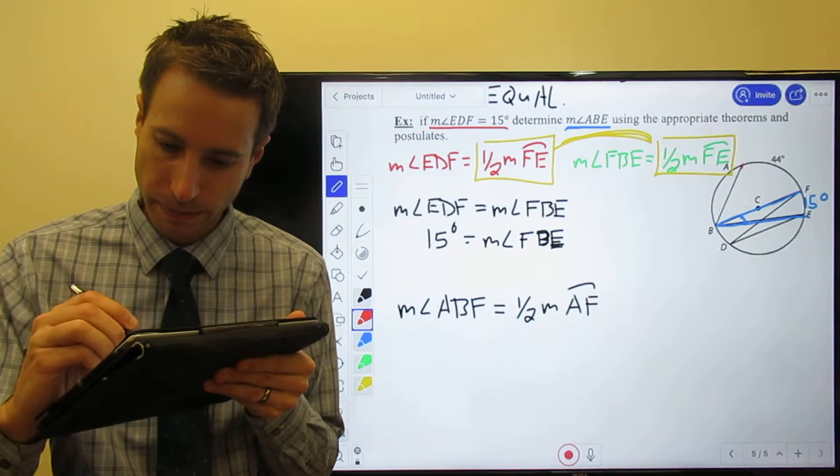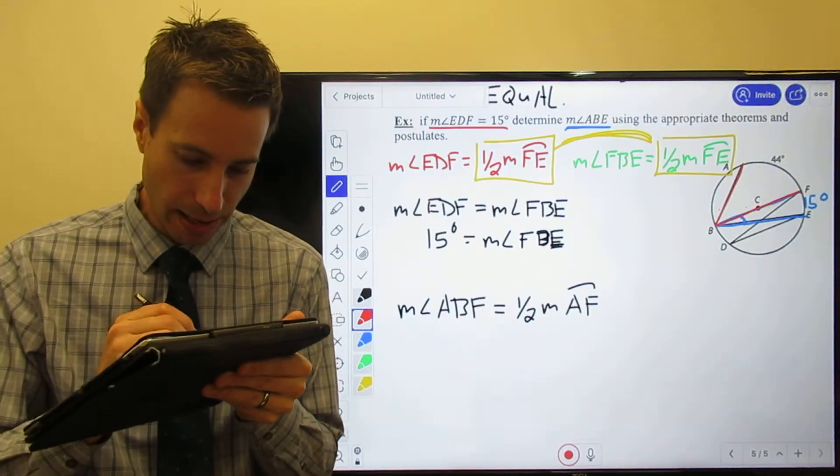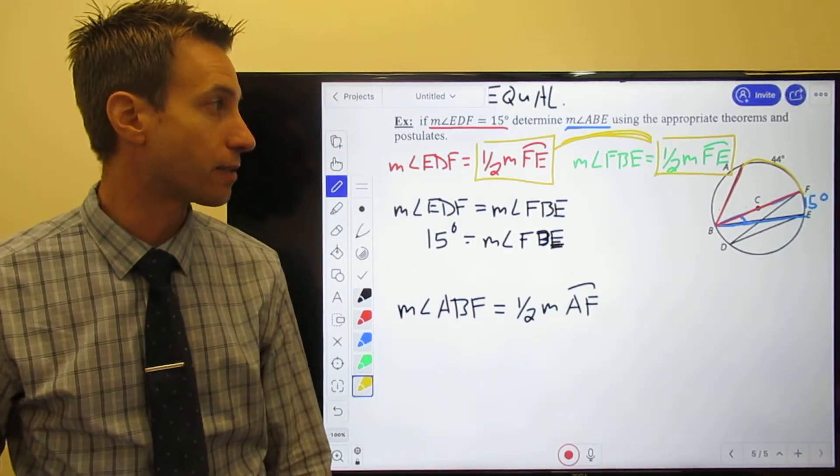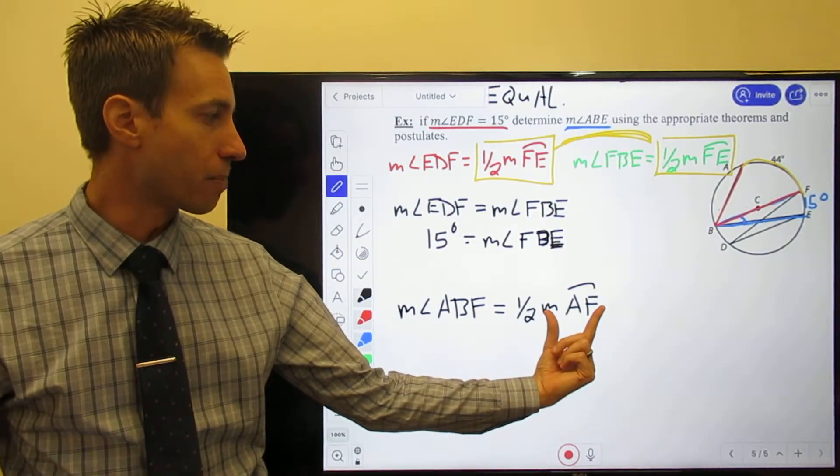They gave me the arc. It's 44 degrees. So we're going to drop in 44. That'll find me the measure of that angle right there.